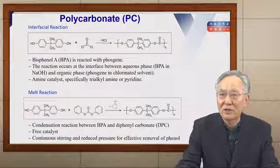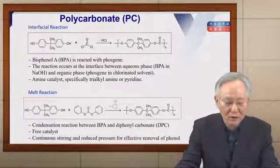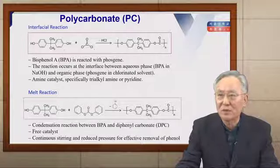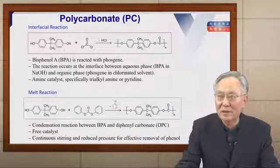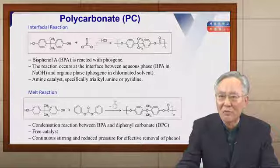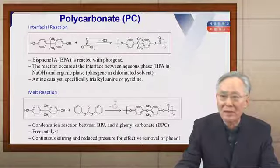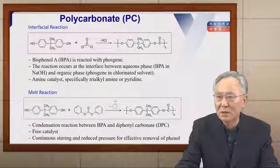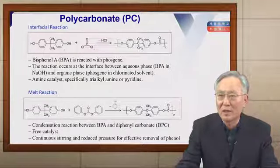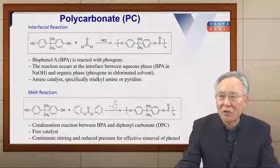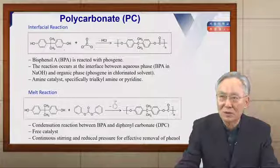The interfacial reaction takes place at the interface between an aqueous phase — BPA dissolved in sodium hydroxide aqueous solution — and an organic phase — phosgene dissolved in chlorinated solvent. In these interfacial reactions, an amine catalyst is used, more specifically trialkyl amine or pyridines, to trap hydrogen chloride as a byproduct.